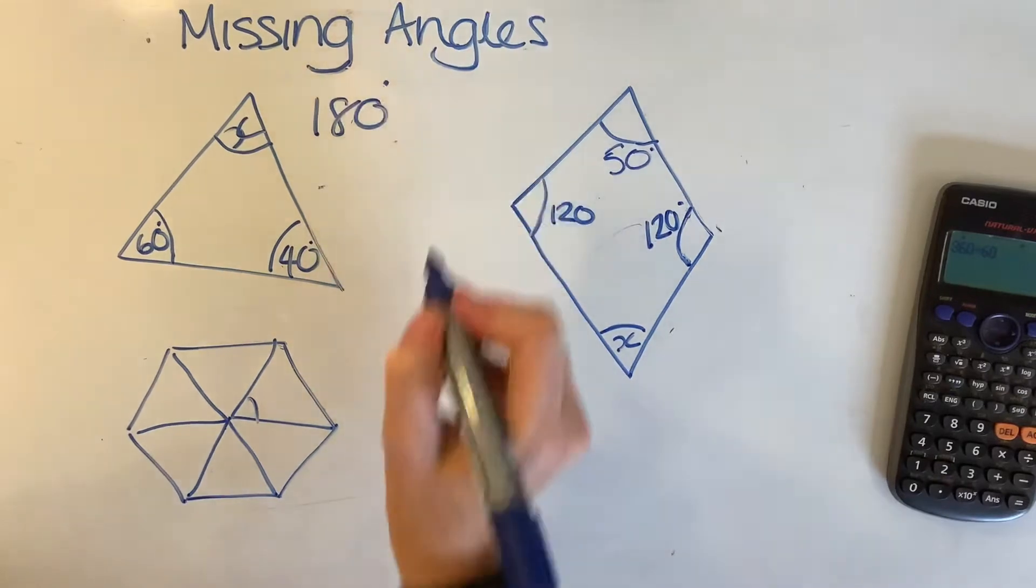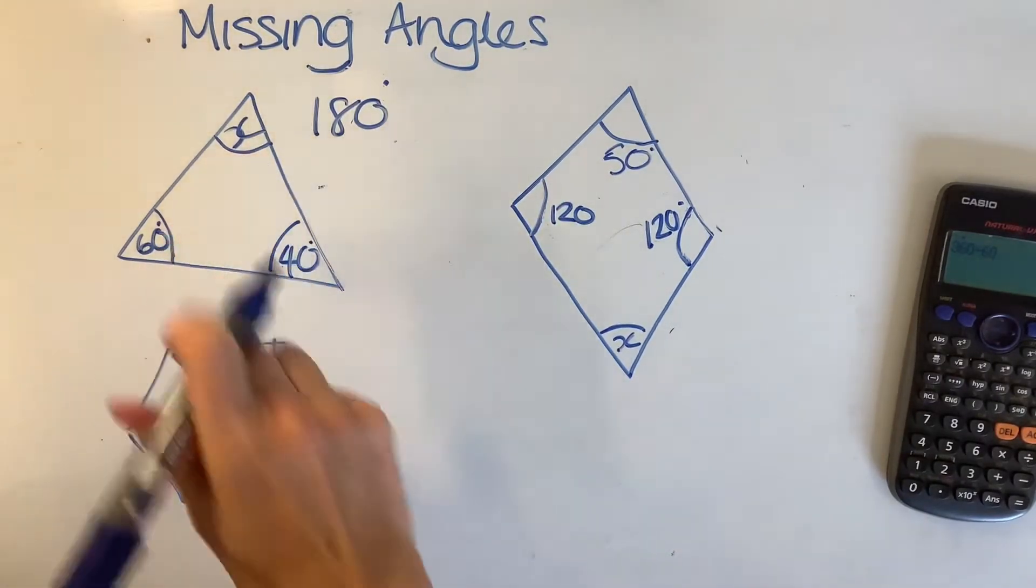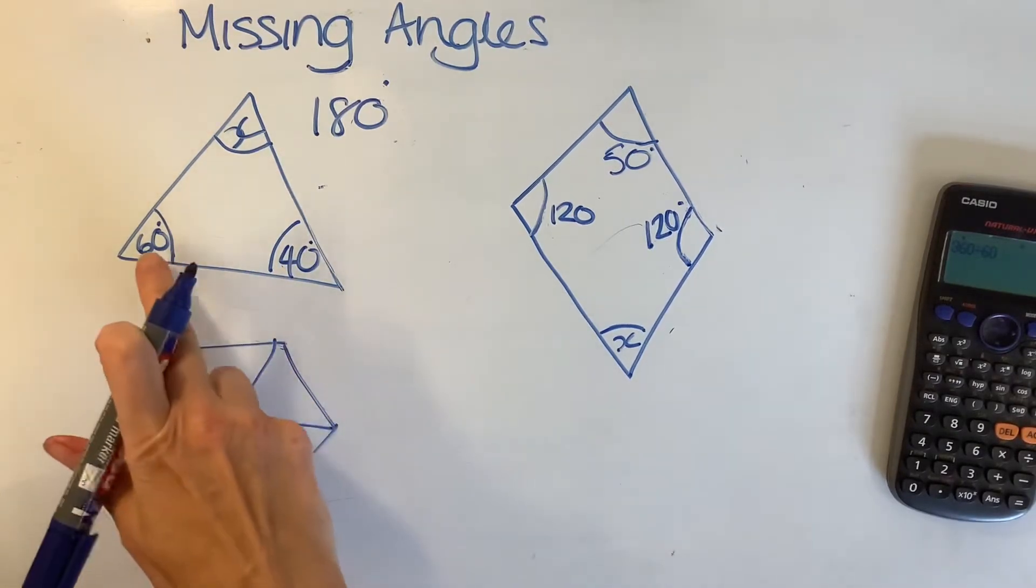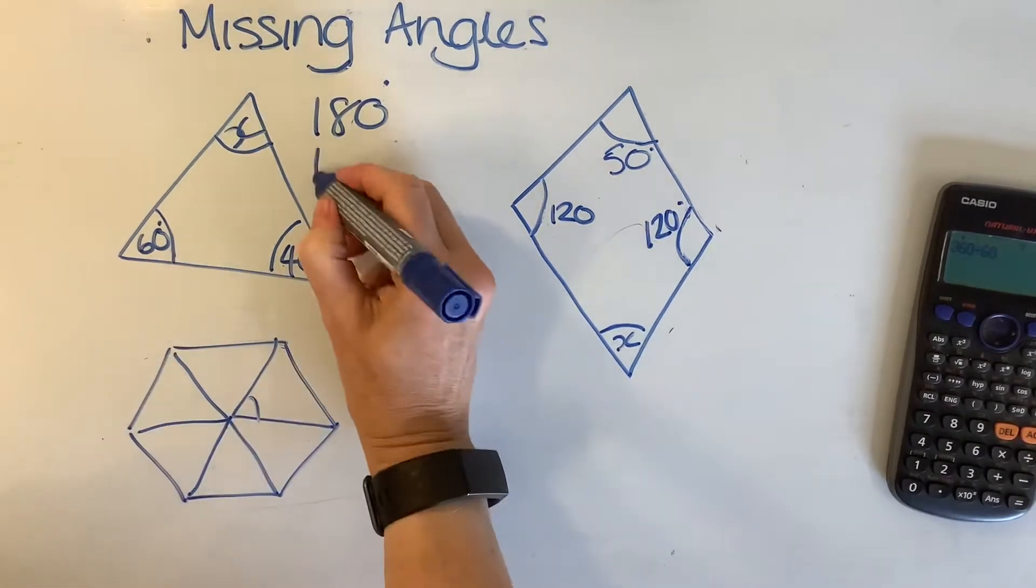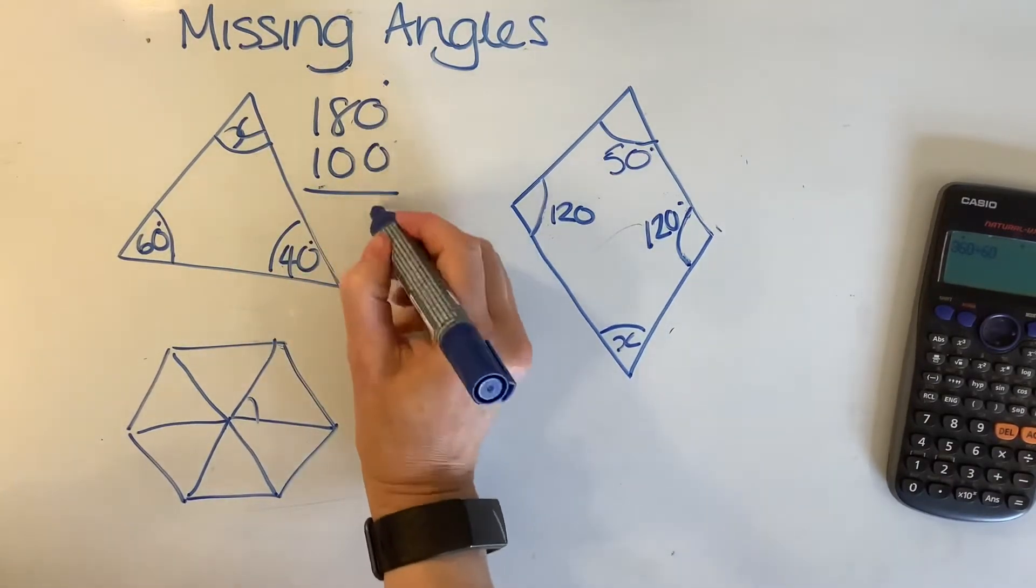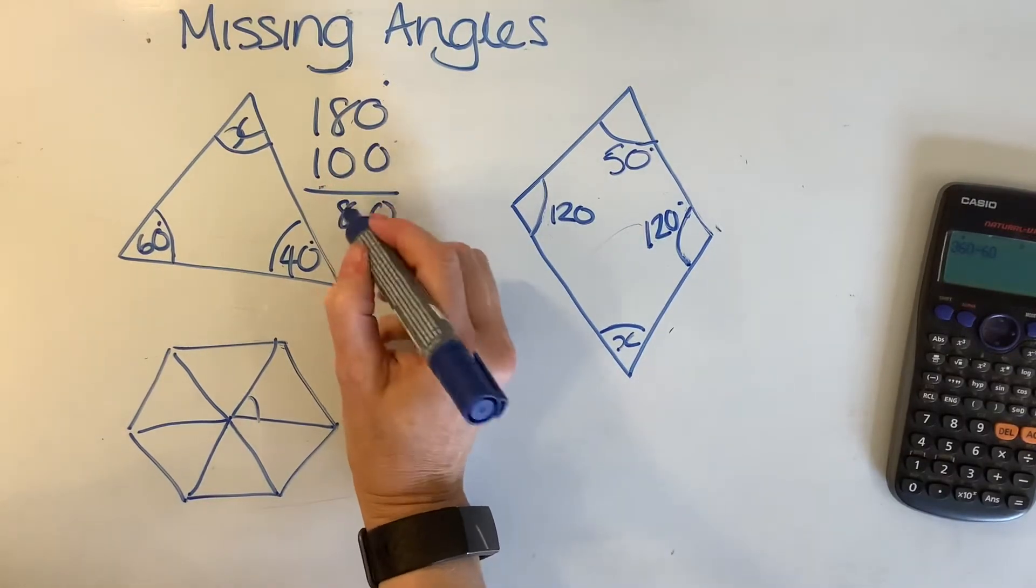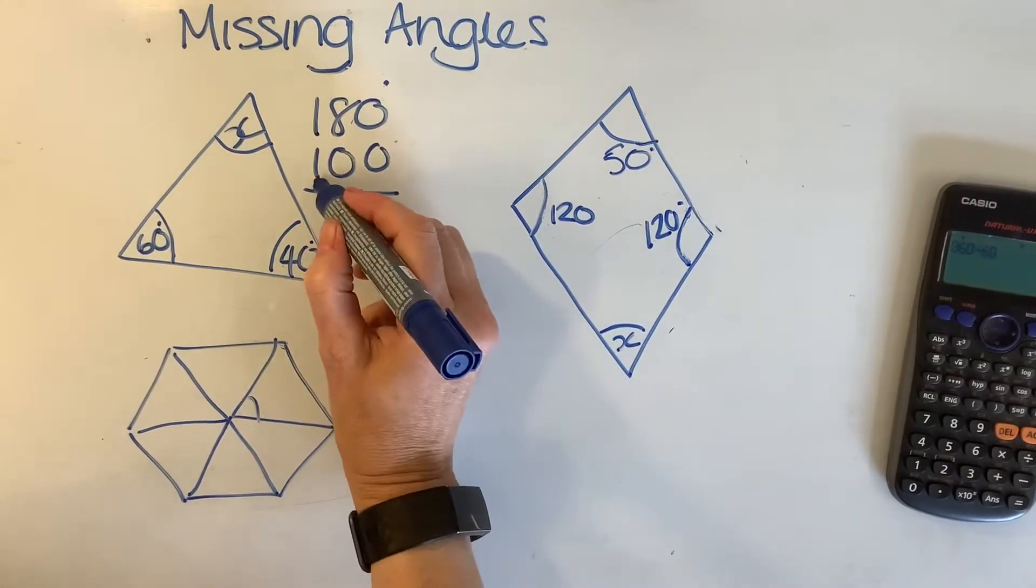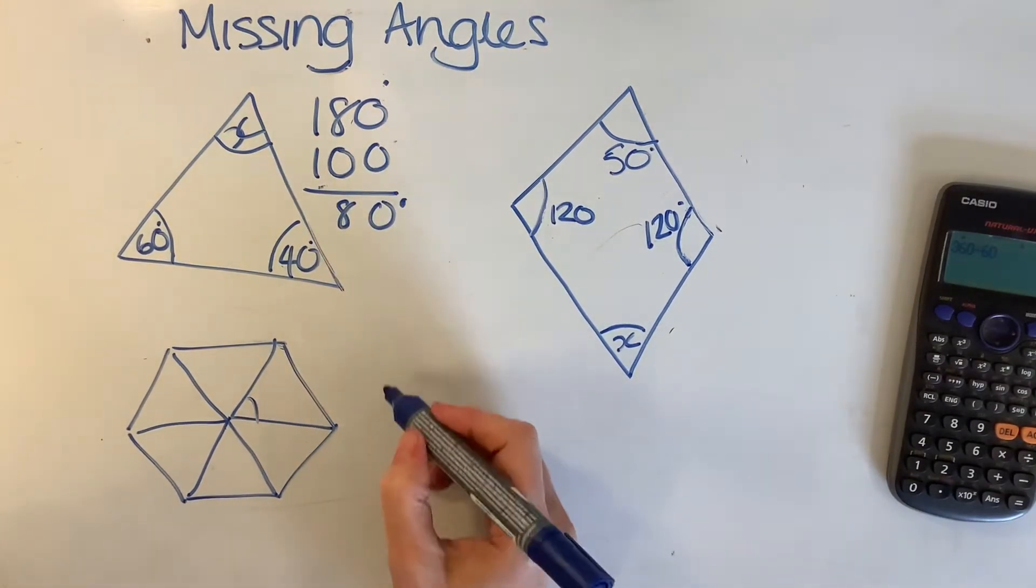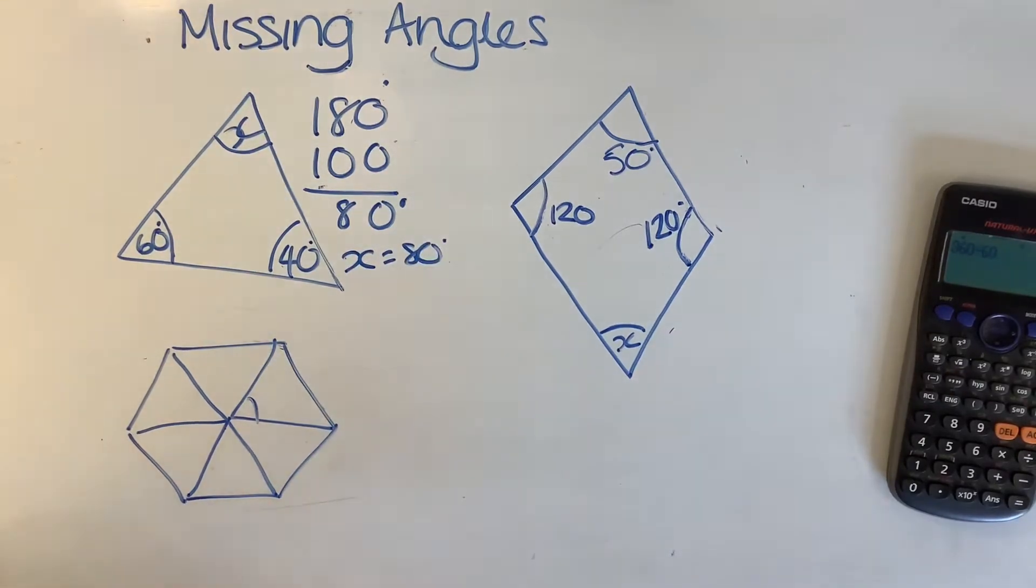That does not change. So 180 degrees. To find out what our missing angle X is here, we add the angles that we know. So we've got 60 add 40, which is 100. I then take it away from 180. 0 take 0 is 0, 8 take away 0 is 8, 1 take away 1 is nothing. So we're left with 80 degrees. So X must be 80 degrees. Reasonable.